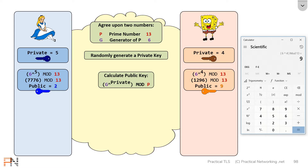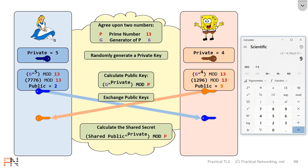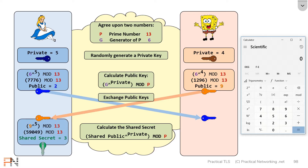Now that both parties have these public values, they're going to exchange them with one another. Anybody listening in on the wire will also hear what these public values are. Then Alice and Bob are going to combine the public value that was shared with their own private values to finally attain the shared secret. From Alice's perspective: she's going to take 9, which was Bob's public value, raise it to the fifth power — her private value — then figure out the remainder when divided by 13, which is our prime number. The result of that is 3.